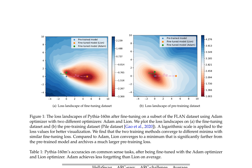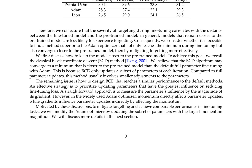The paper addresses forgetting in fine-tuning Pythia 160M on common-sense tasks. It is observed that the Atom optimizer tends to converge to a minimum significantly farther from the pre-trained model, leading to higher pre-training loss and forgetting. In contrast, the Lion optimizer converges to a minimum with similar fine-tuning loss but closer to the pre-trained model, resulting in less forgetting. To mitigate forgetting, the authors propose modifying the Atom optimizer by updating the subset of parameters with the largest momentum magnitude, inspired by the classical block coordinate descent method, resulting in smaller parameter adjustments compared to full-parameter fine-tuning with Atom.